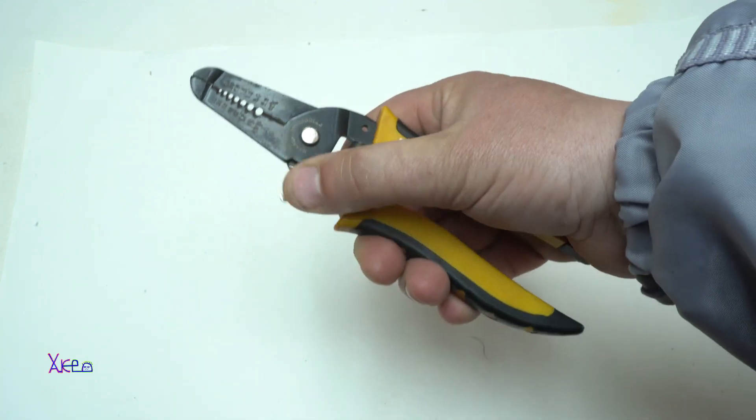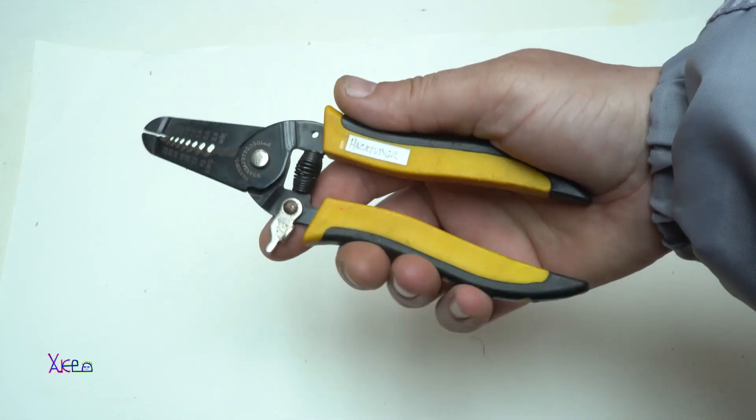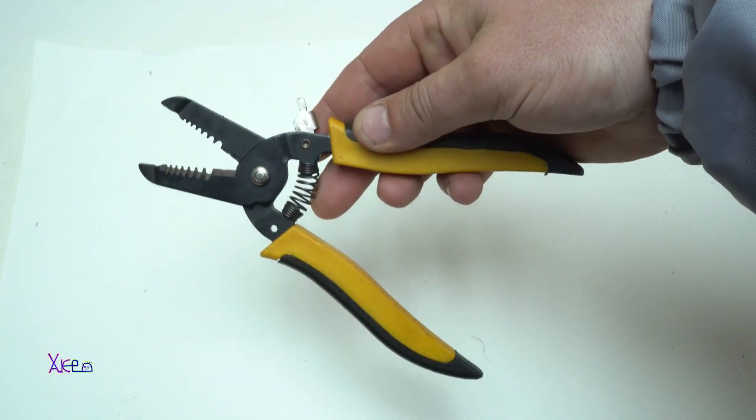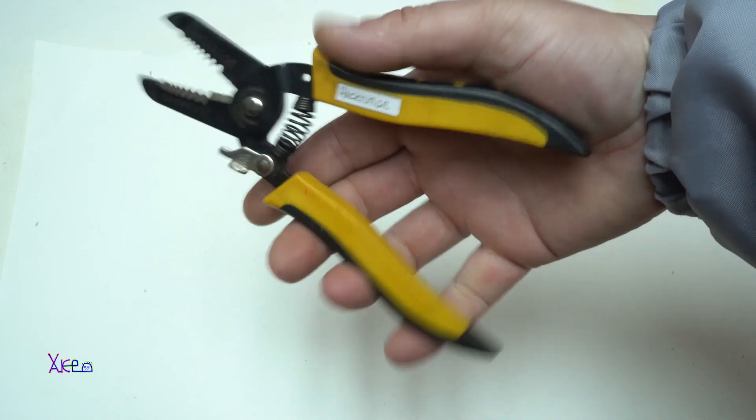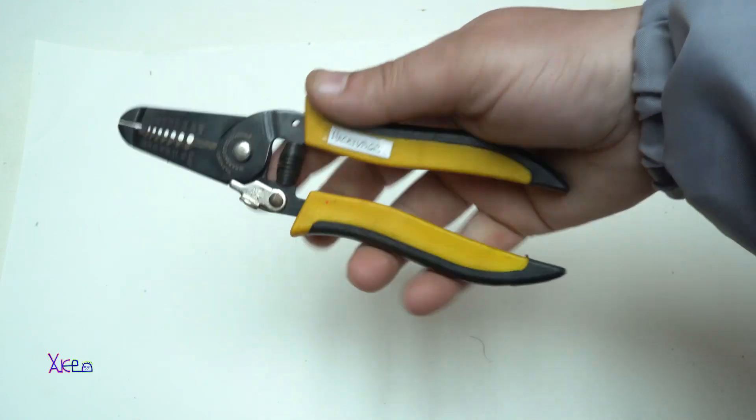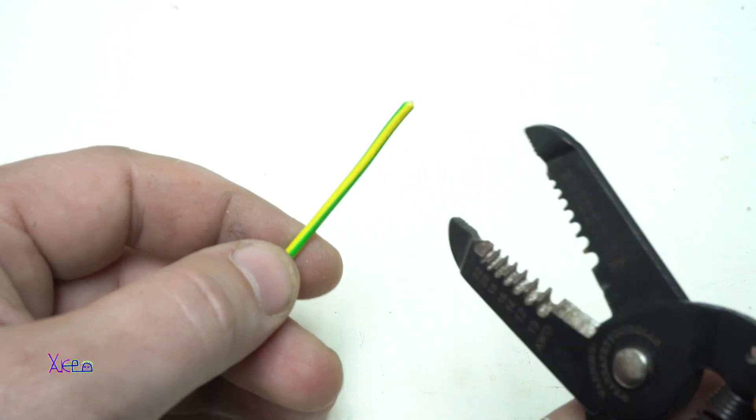Wire strippers are another must-have tool for any DIY electronics enthusiast. They allow you to easily remove the insulation from the wires, making connections a breeze.